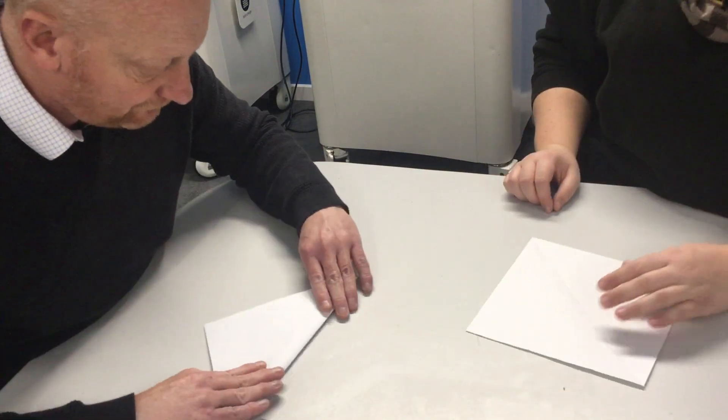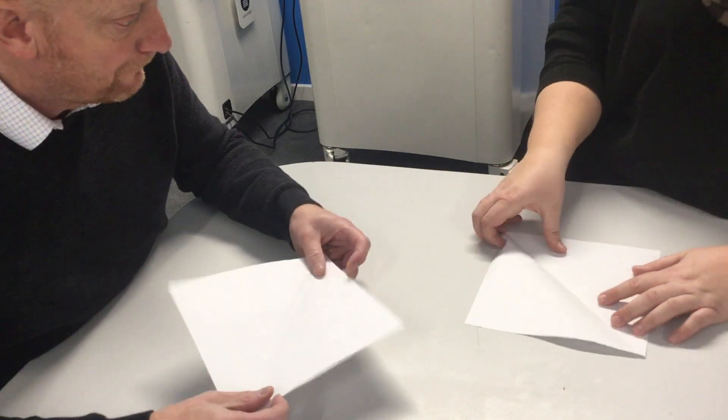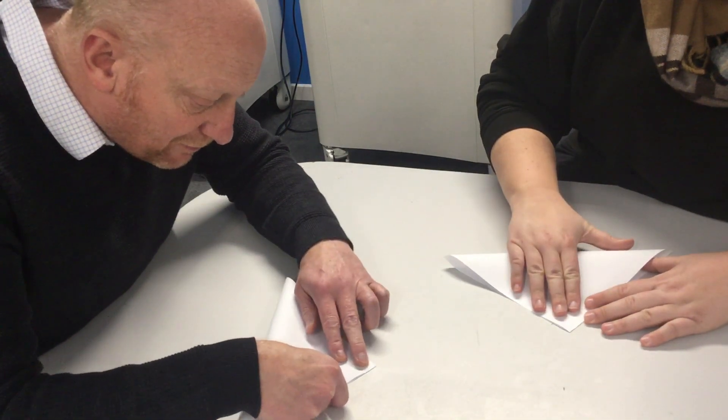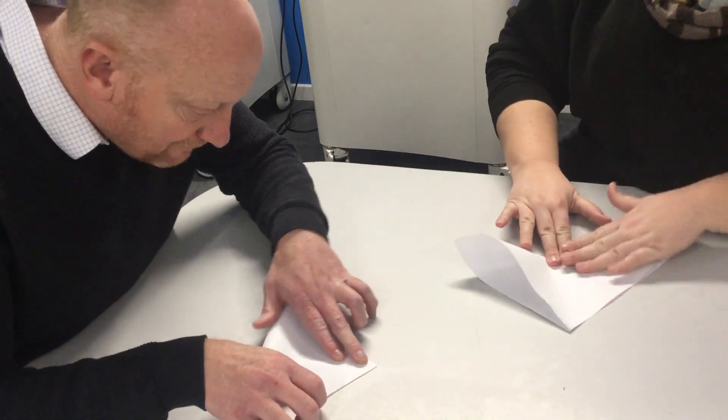Then we're going to fold it on the other diagonal. And again, we're scoring it back and we're going to fold both ways. Make that fold nice and sharp.